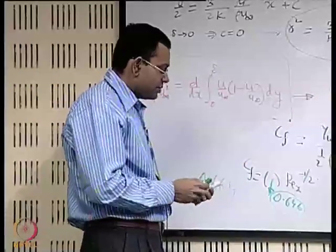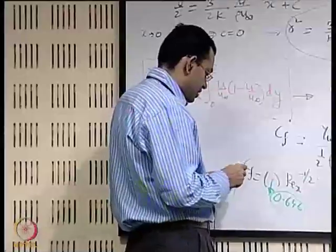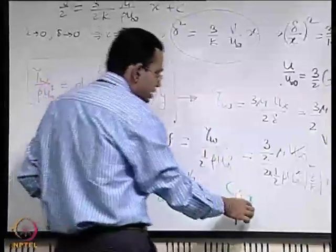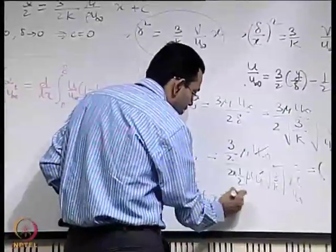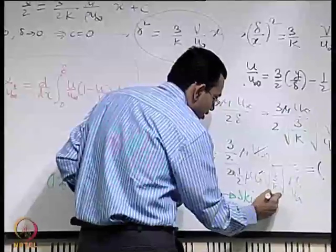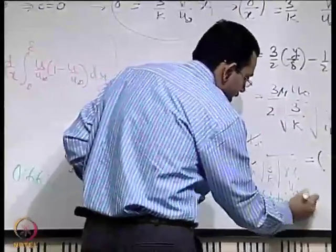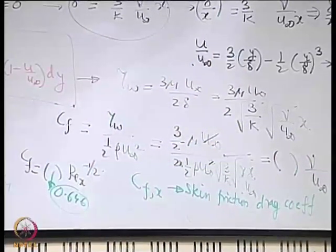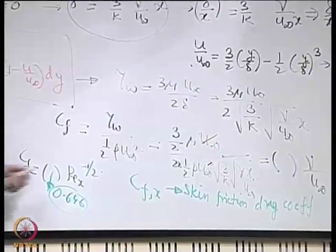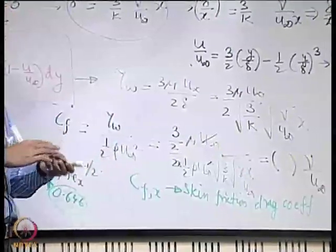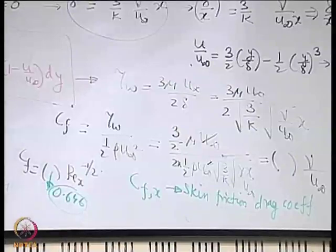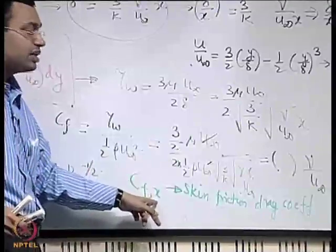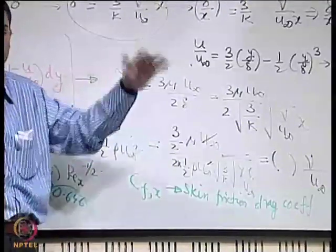This is called the skin friction drag coefficient, sometimes written as CF with subscript x to indicate it is the local friction coefficient that varies with x. We call it skin friction drag because this drag force originates from frictional or viscous action. There will later be other mechanisms of drag on a body, so the subscript distinguishes the source.